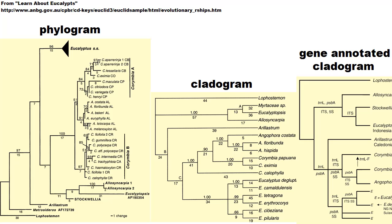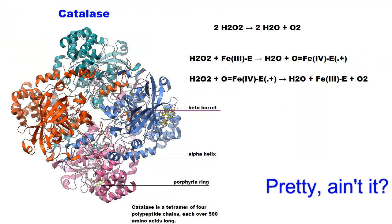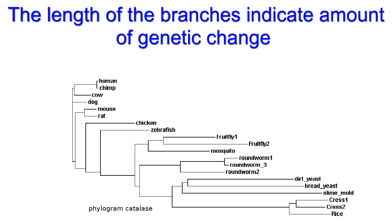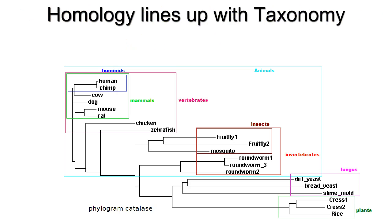A brief background on phylograms: they reflect genetic distance graphically as a series of branches. I'll include a few links on how to interpret them properly. Here's our first gene product: catalase. Catalase is an enzyme that protects cells from oxidative damage. We would expect it to be evolutionarily conserved, and it is — but we can see how organisms that are closely related are grouped together by the genetic markers in the catalase sequence.